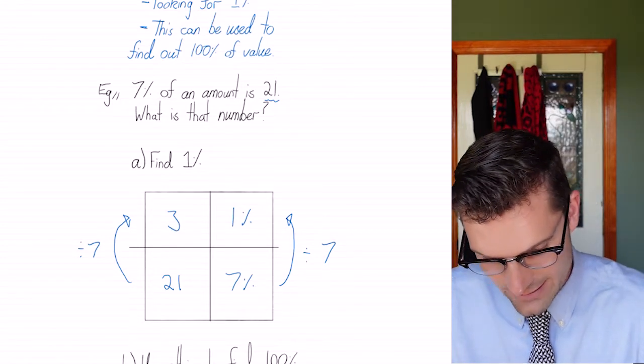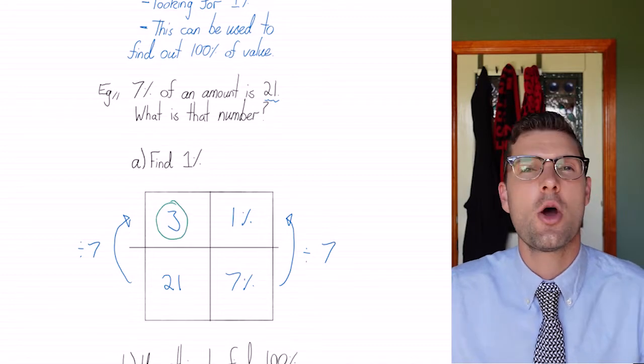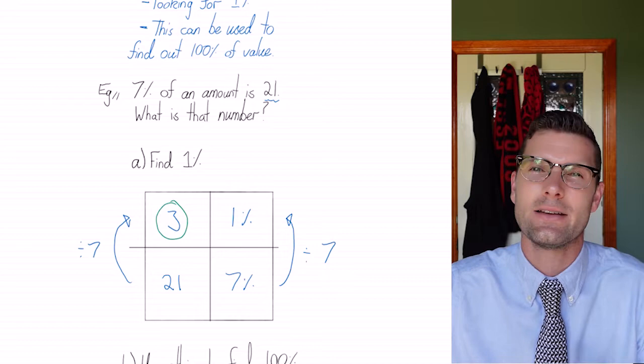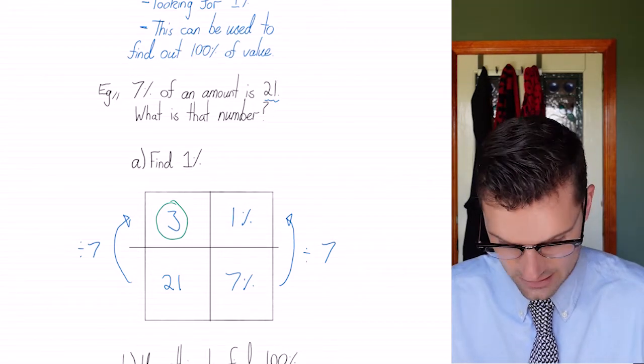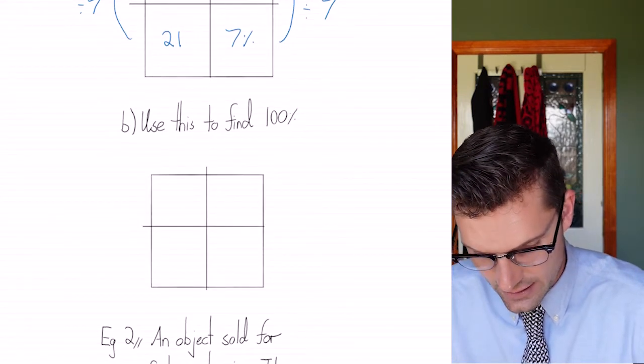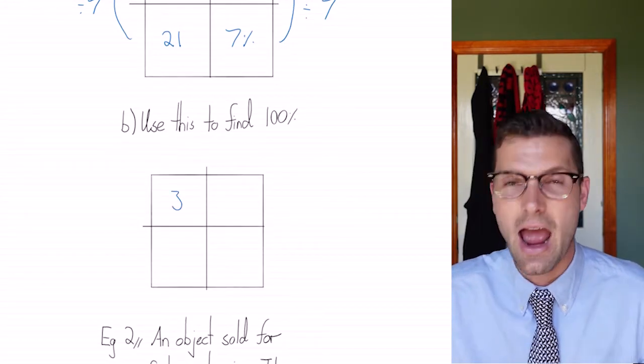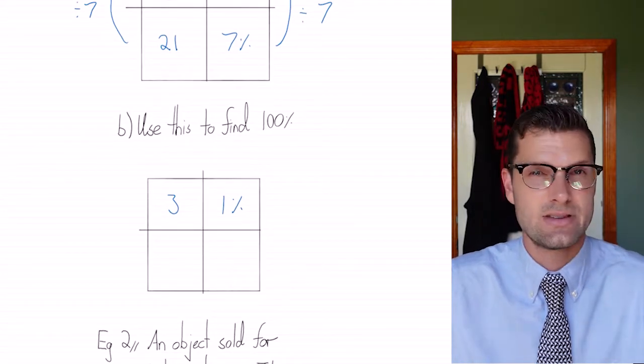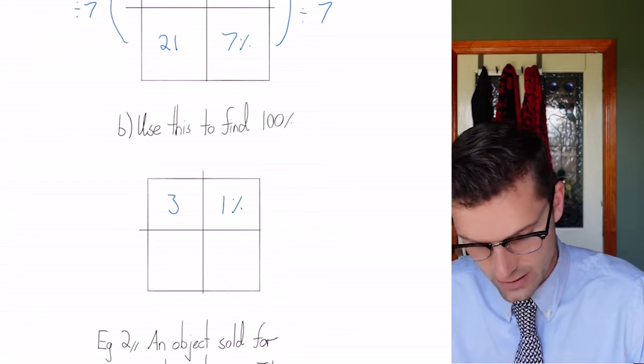This isn't the final answer though. We know that from this question, we're gonna have a number that's much bigger than 21, because 21's only a fraction of the overall amount. So now we know that one percent, three is equal to one percent, and I need to find out what the whole amount is, or I need to find a hundred percent of this number that we need.